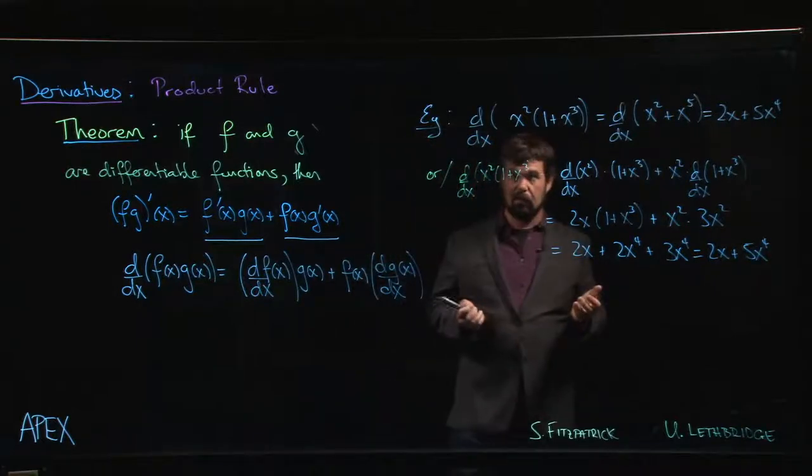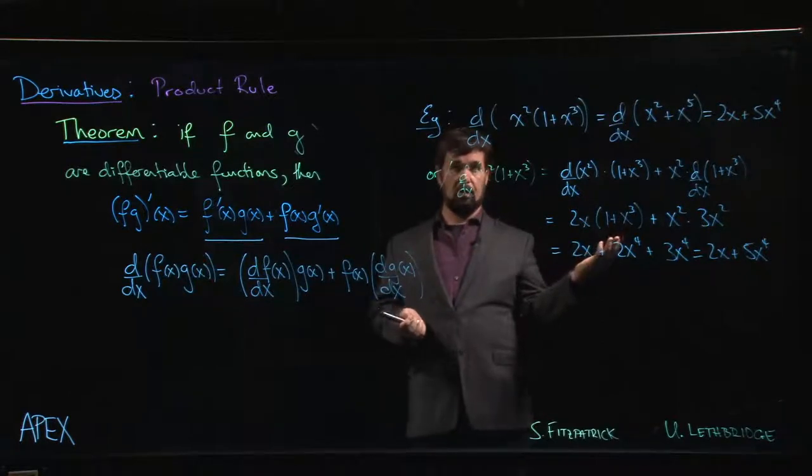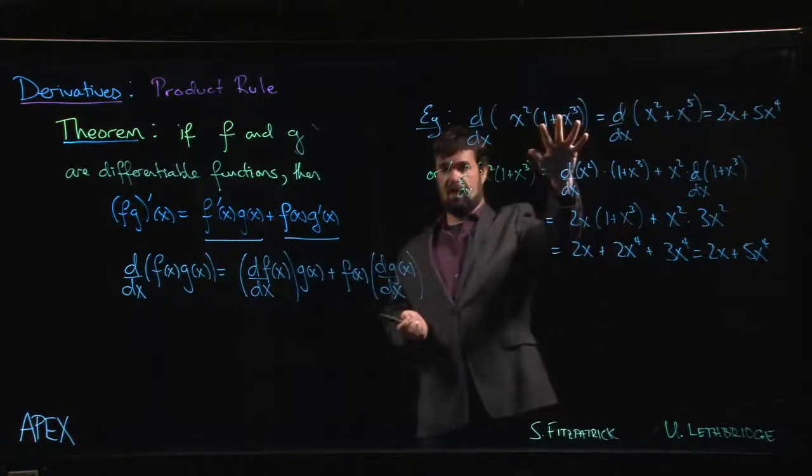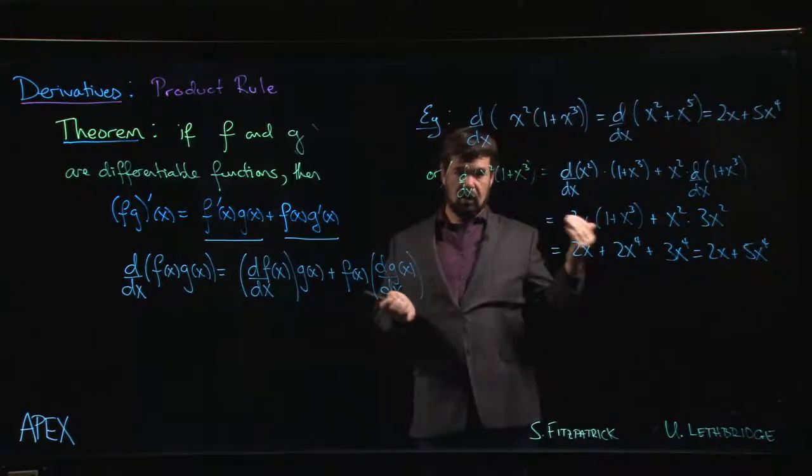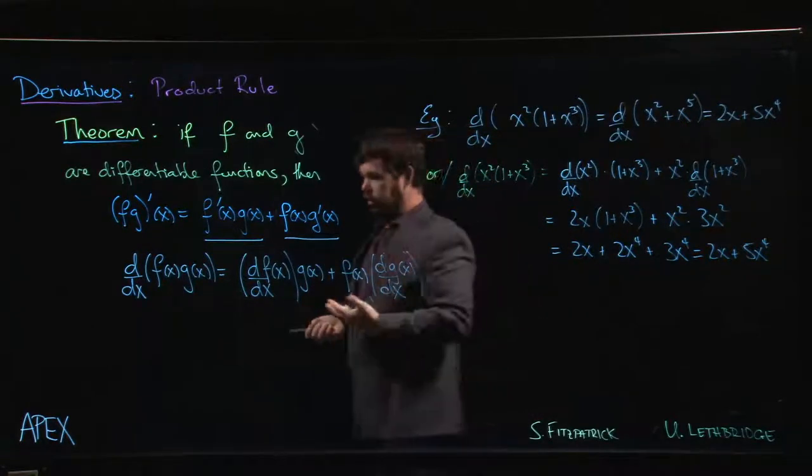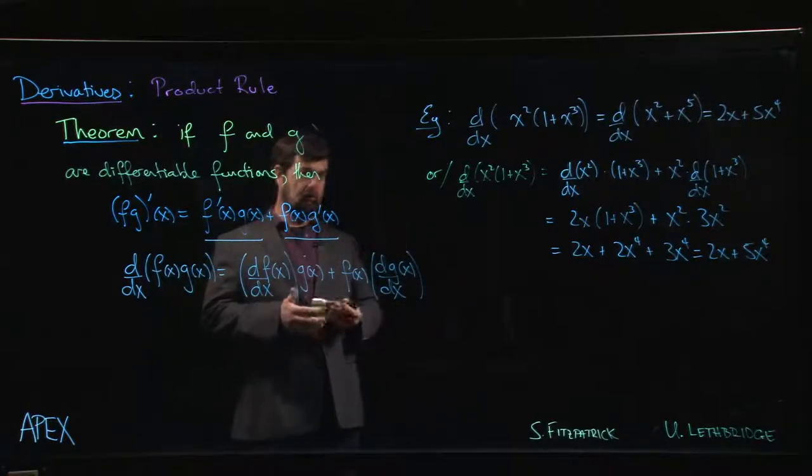And of course, there are going to be a lot of situations where multiplying things out like this is simply not possible, right? What if this was a trig function like sine? What if it's a square root function? Then we can't just multiply out and take the derivative term by term; we have to know how to deal with the derivative of a product.